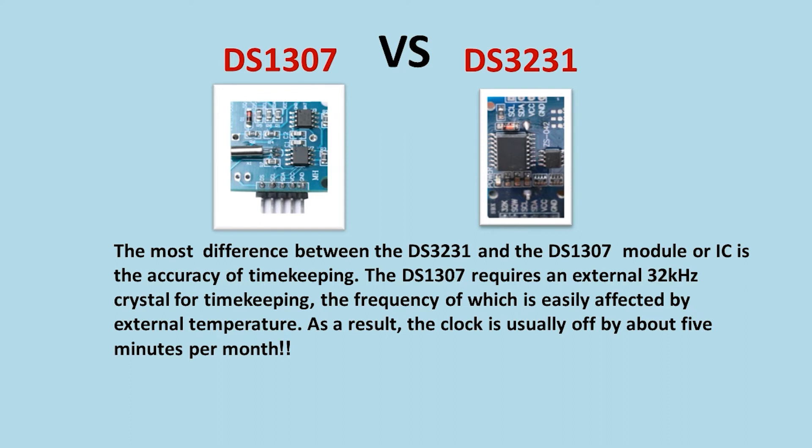Both modules differ in price — the DS3231 is more expensive. To solve the temperature problem in the DS1307, a temperature sensor must be added to compensate for accuracy.